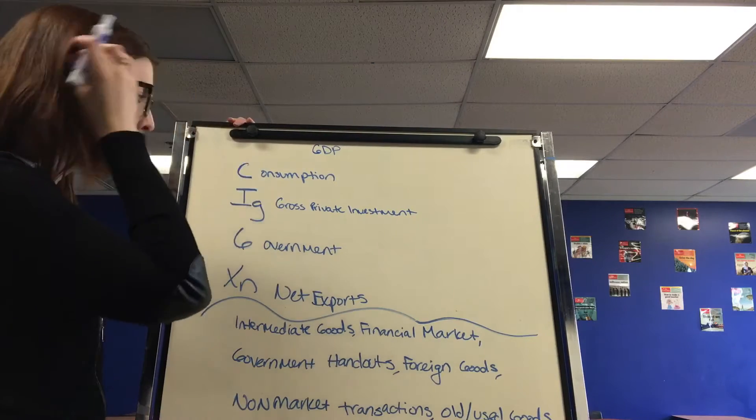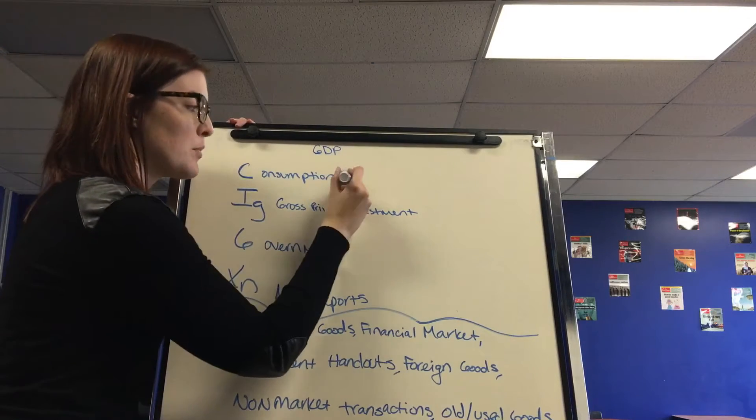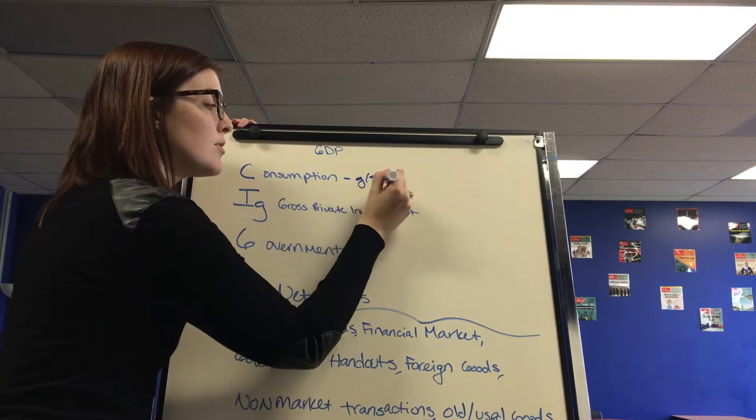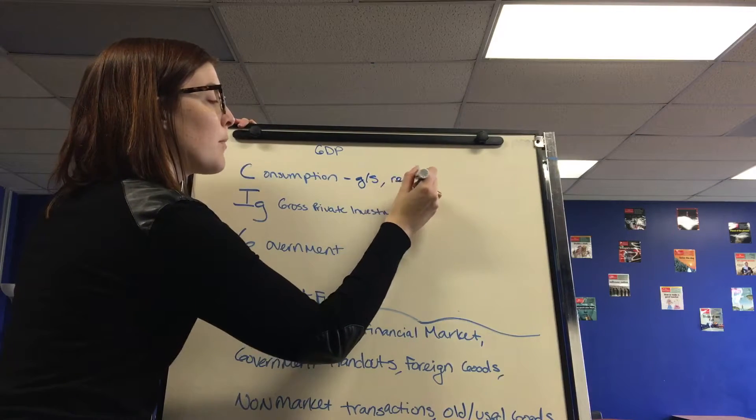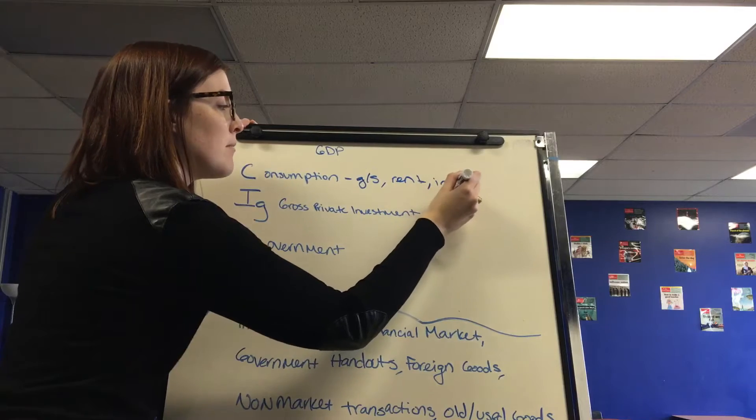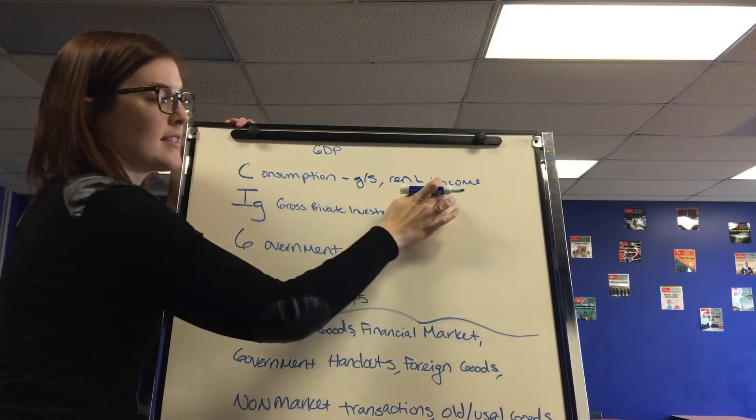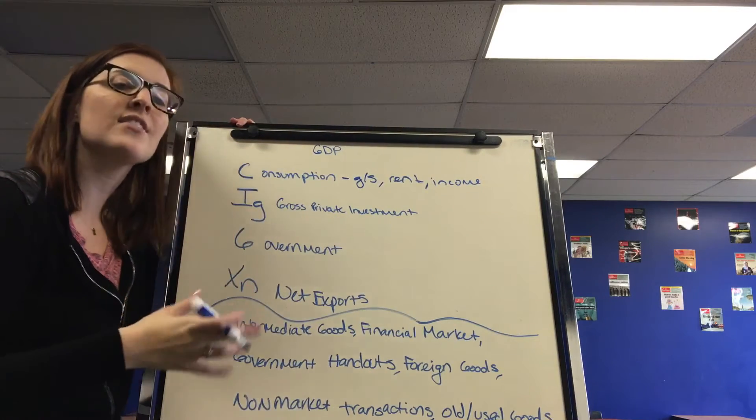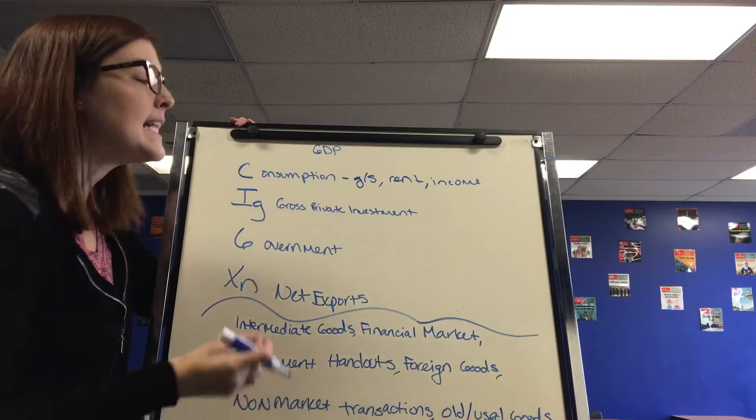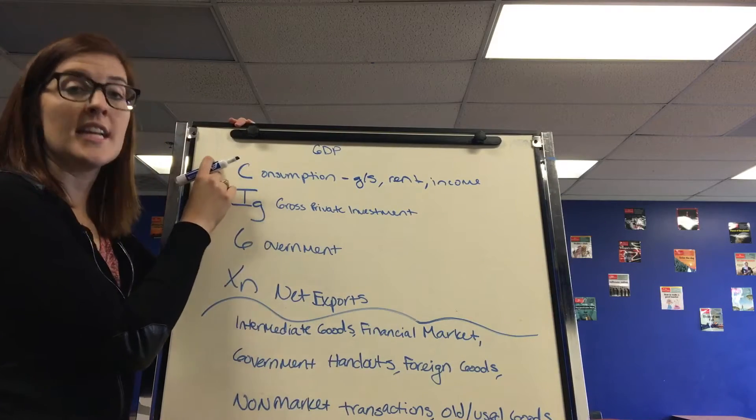Two other things to note, it is just dealing with goods and services produced, but also two things that count under consumption, paying rent and your income. Now don't mix up income just because it starts with an I. I think of it as the consumer's income. That helps remind me that it fits under C, not I.